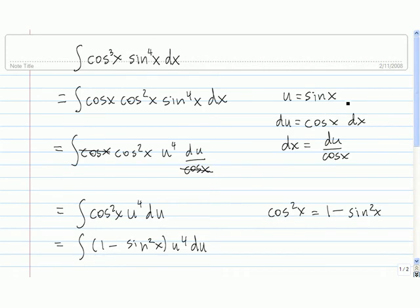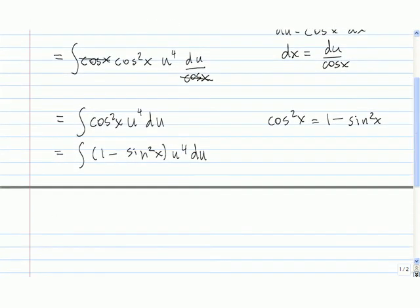Now I'm going to take my u, which is sine x, and replace it right here. So this here is equal to the integral of 1 minus u squared times this u to the fourth du. And now we distribute. So this is equal to the integral of u to the fourth times 1 minus u squared times u to the fourth, which is u to the sixth du.